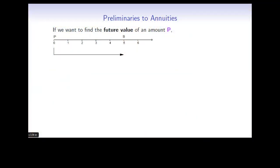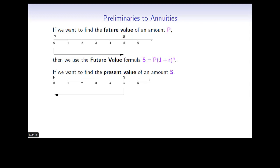Let's have a look at the future value and the present value of lump sum investments or debts. If we want to find the future value of an amount P, looking at the relationship between P and S on a timeline, we use the future value formula S equals P times (1 plus r) to the power n. On the other hand, if we want to find the present value of an amount S — where S is in the future with respect to P — we use the present value formula P equals S times (1 plus r) to the power minus n.